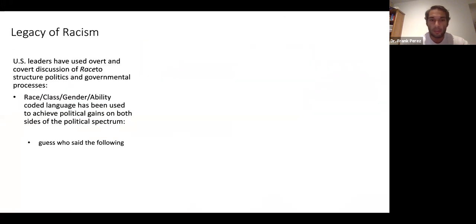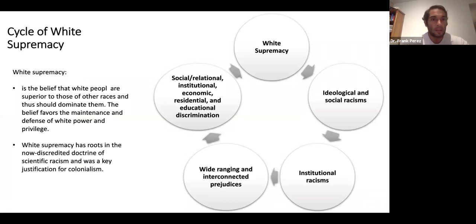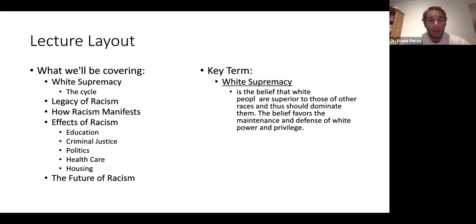What we're going to be covering today is white supremacy, and I'm going to provide a cycle. This model will be helpful in understanding how racism continues to operate in our society. We'll look at the legacy of racism with one specific historical example, then how racism manifests, its effects across education, criminal justice, politics, healthcare, and housing, and then the future of racism, where we'll talk about colorblind racism specifically.